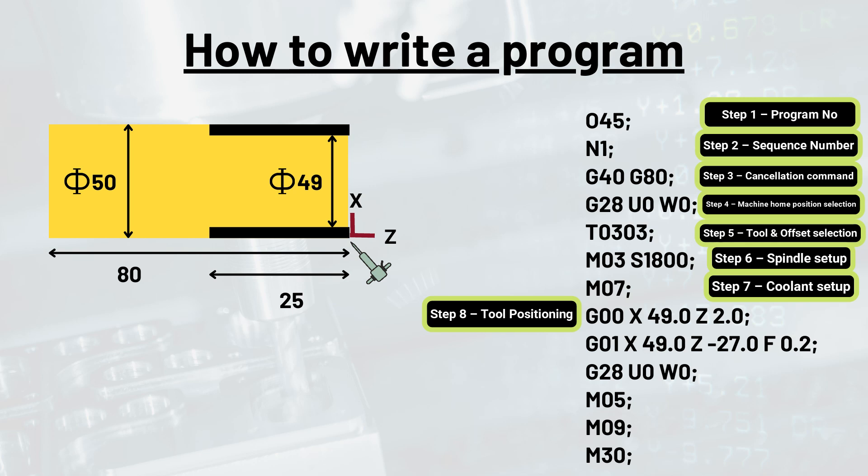The tool will have rapid positioning first and hence G00 command will be used. G00 X49 Z2.0 would be the complete line here. 2.0 unit depth has been taken for initial cut in the Z axis.